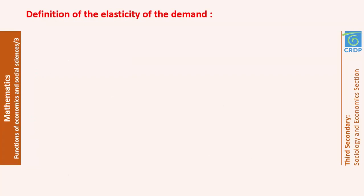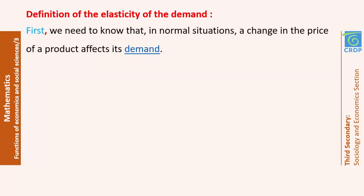What is the elasticity of the demand? In normal situations, a change in the price of a product affects its demand. If a price increases, we might not buy the product anymore. On the other hand, if the price decreases, we will buy it more, meaning more quantity will be bought. The cheaper the item, the more the demand. This is why we say that the price of a product affects the demand.